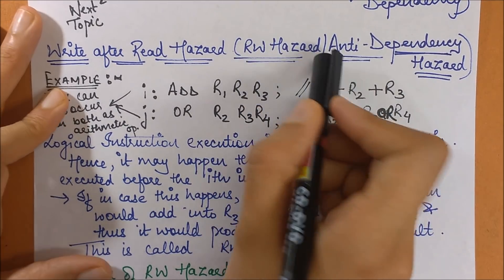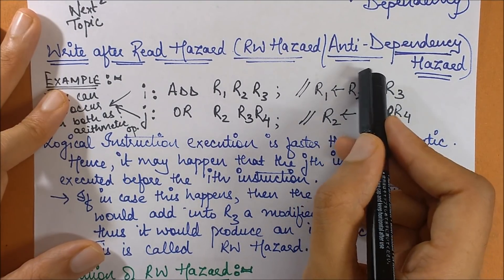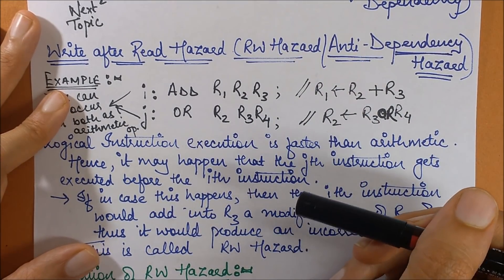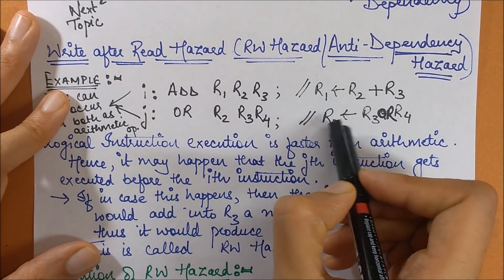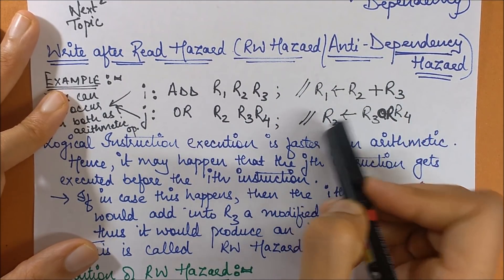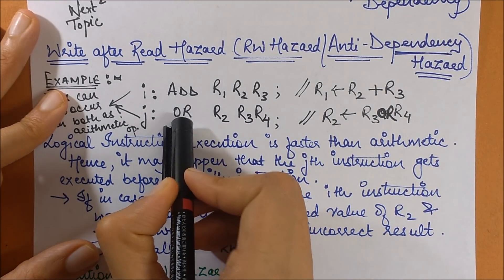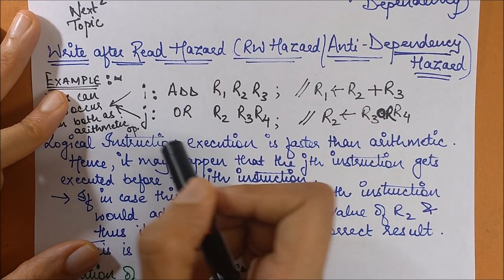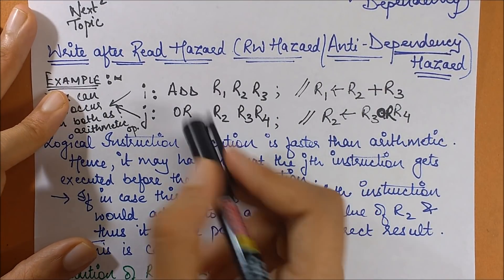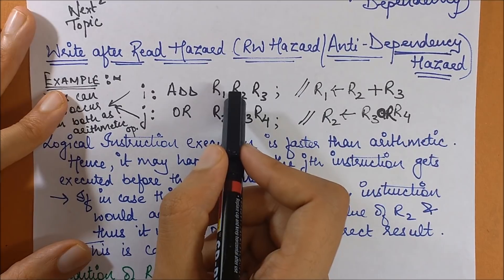This is known as a read-write hazard. Initially instruction i was reading R2 and then writing, but the order got changed — hence this is called read-write hazard. How do you identify this? There will be a read and then a write with the same data item in your set of instructions. It's important to note that the j-th instruction does not necessarily have to be a logical instruction; even if it is another arithmetic operation like subtract, this hazard can still occur because the race-around condition is always present.